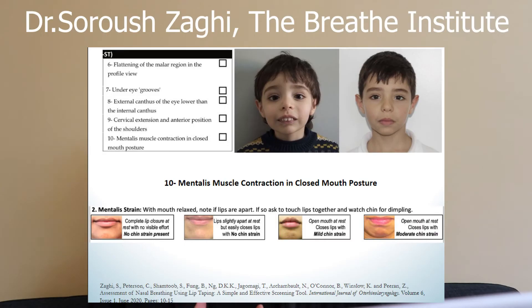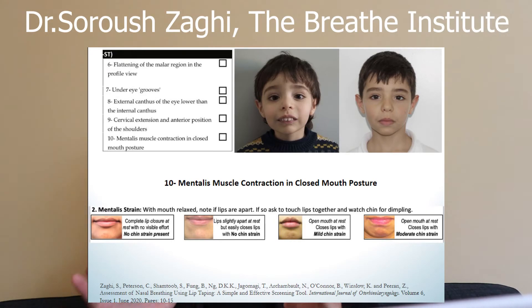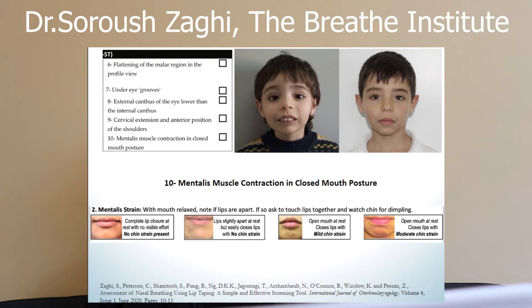It's also anterior pelvic tilt. The last sign to look out for is how much strain is required to keep the mouth shut. Your teeth should be such that you can close your mouth without any effort. But if you have a mismatch in your jaw and bite, you might have to stretch your lips over your teeth to close your mouth. You'll be able to see what's called dimpling — referred to as mentalis muscle strain or muscle contraction.